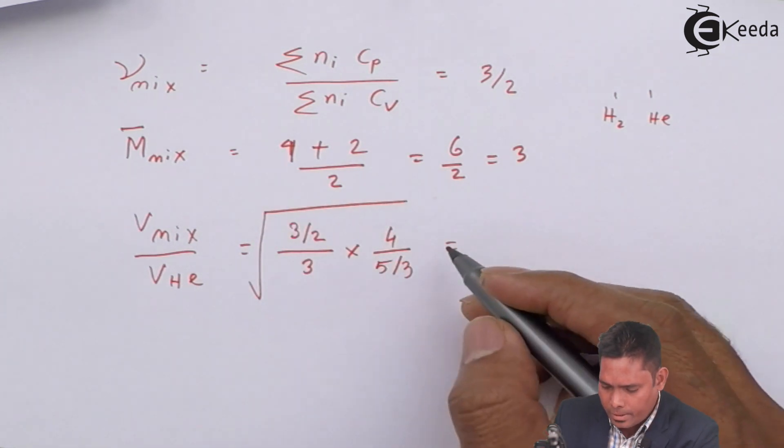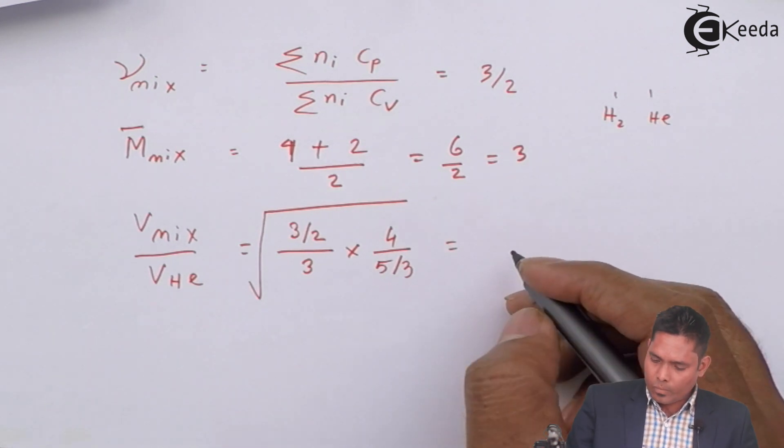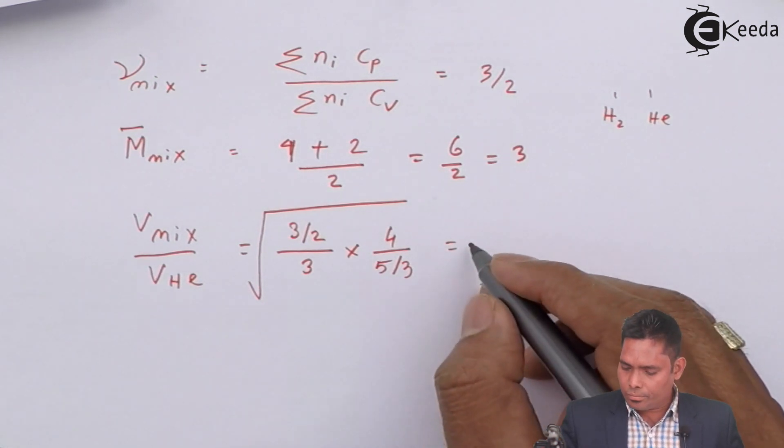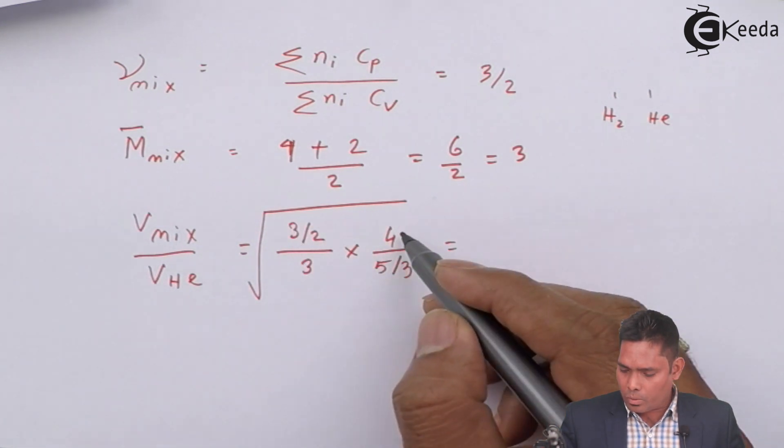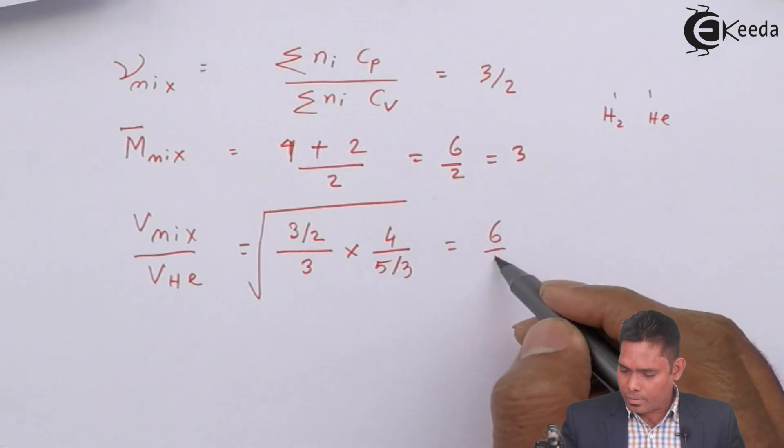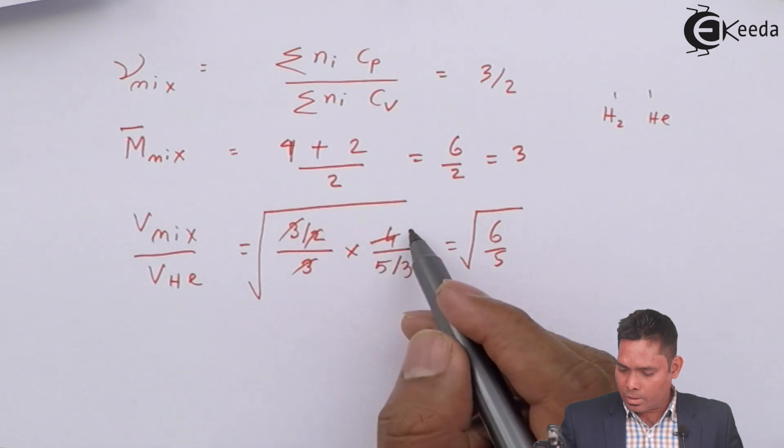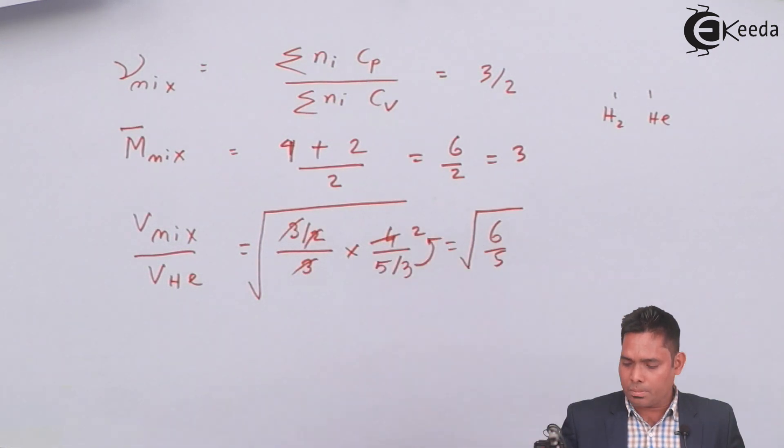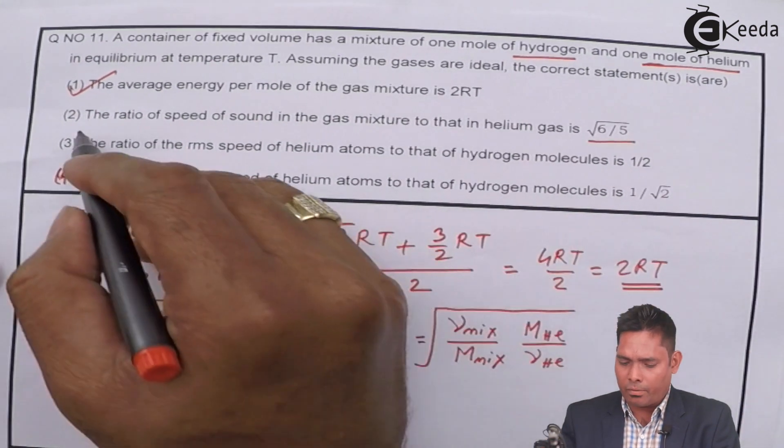So after doing this, here 3 will cancel, this goes 6/5. The 3s will cancel, giving us 6/5 under root. So under root 6/5. Here also under root 6/5, this is also correct.